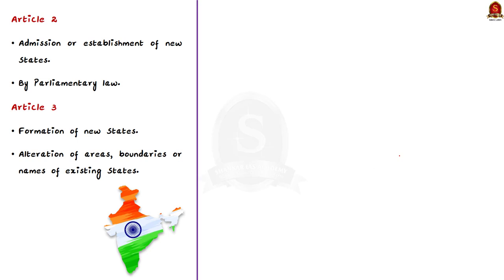Let us start with Article 2. This article talks mainly about the admission or establishment of new states. Article 2 states that the Parliament may, by law, admit into the Union or establish new states. Now moving on to Article 3.